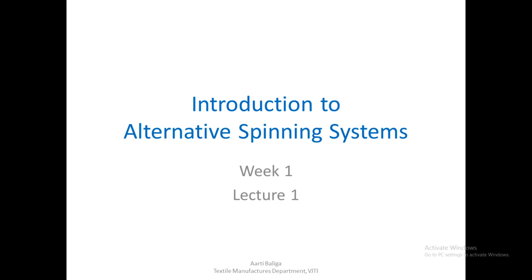When I say alternate spinning systems, it is something which is other than ring spinning system. Till now in our entire past semesters, you have studied the ring spinning system in detail, which produces ring spun yarn. So are there any other systems available which can produce yarns in a way better than what ring spinning system can do? We are going to compare the ring spun yarns with the new spinning systems available to produce yarns.